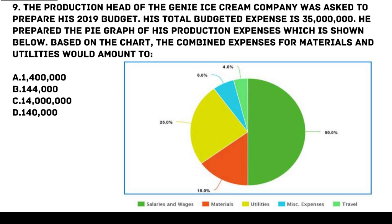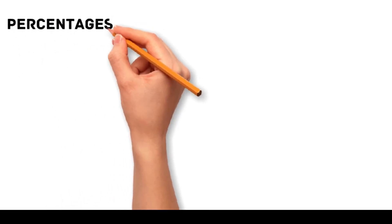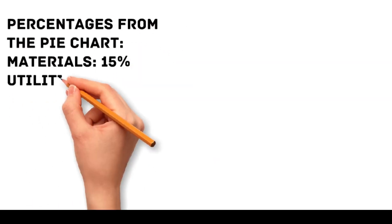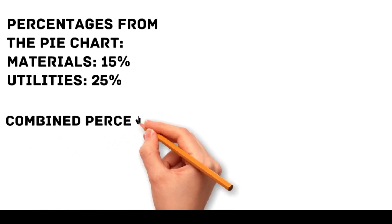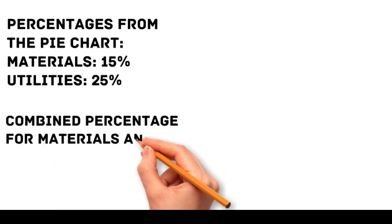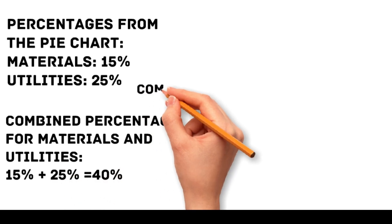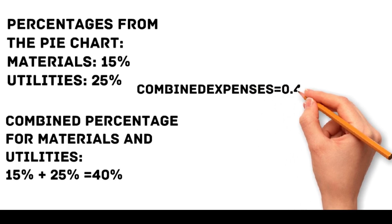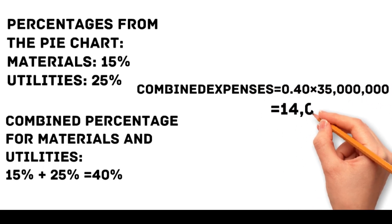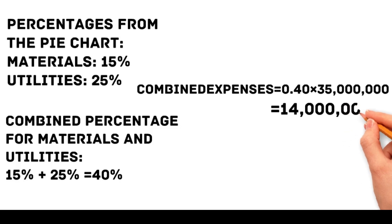To find the combined expenses for materials and utilities, we determine the percentage of the budget allocated to each from the pie chart: materials is 15% and utilities is 25%. Combined percentage = 15% + 25% = 40%. Combined expenses = 0.40 × 35 million pesos = 14 million pesos. Thus, the correct answer is C, 14 million pesos.